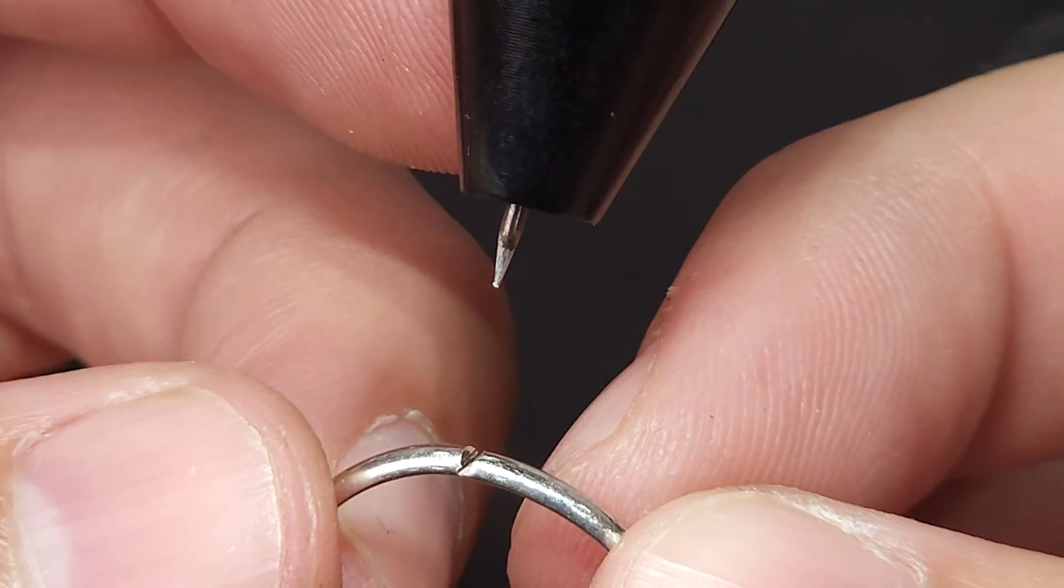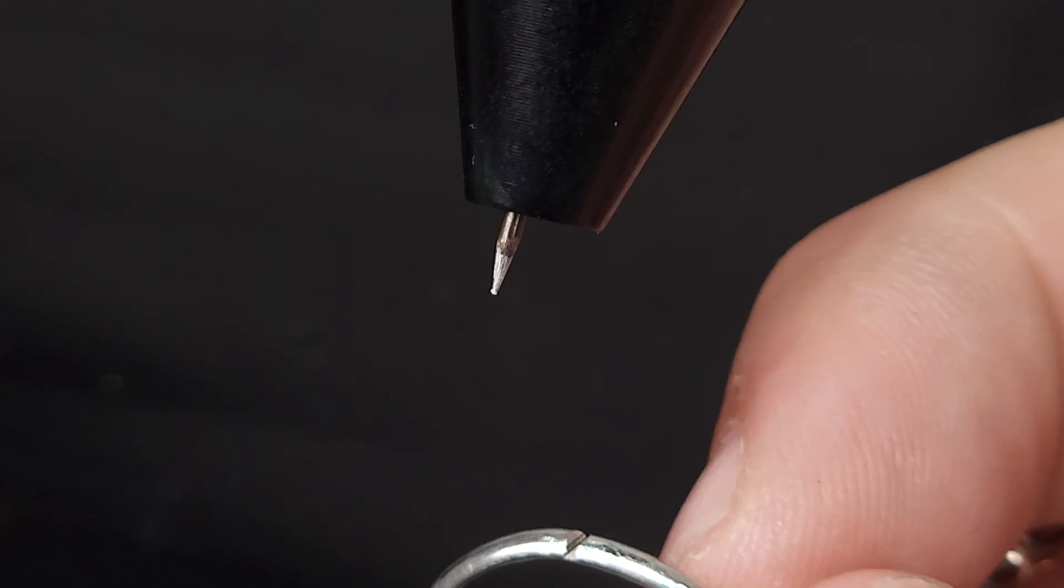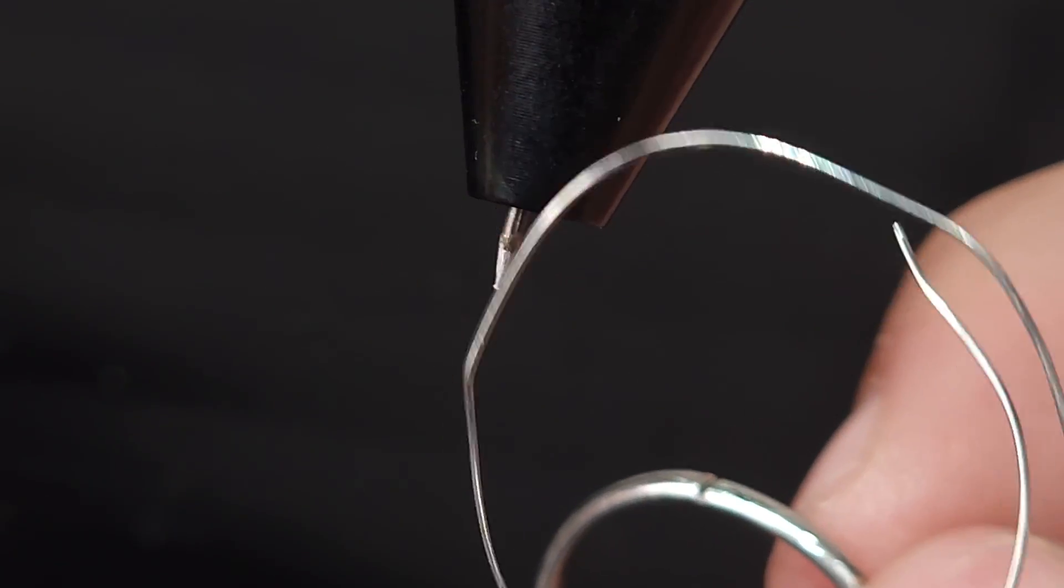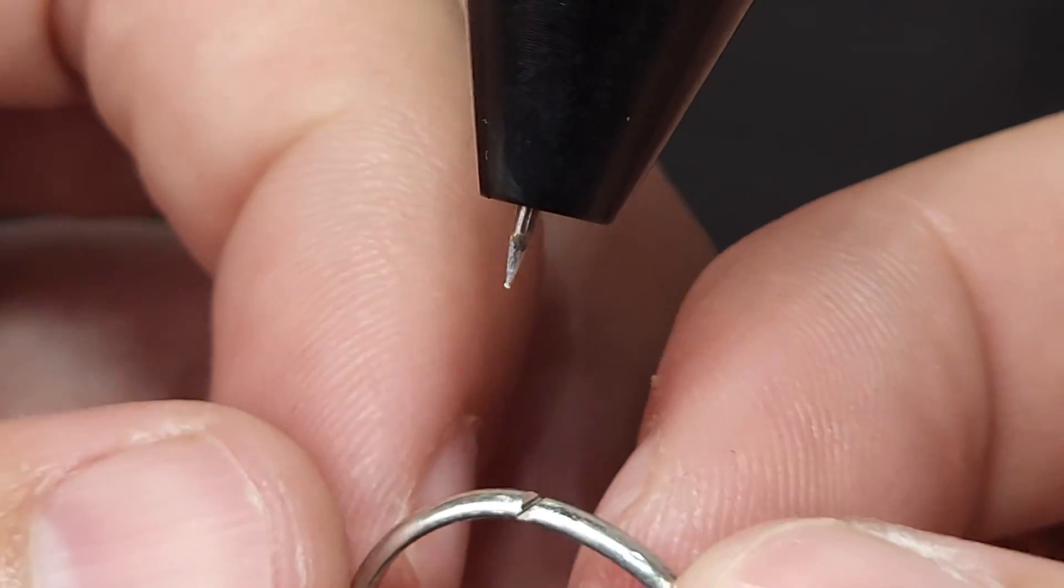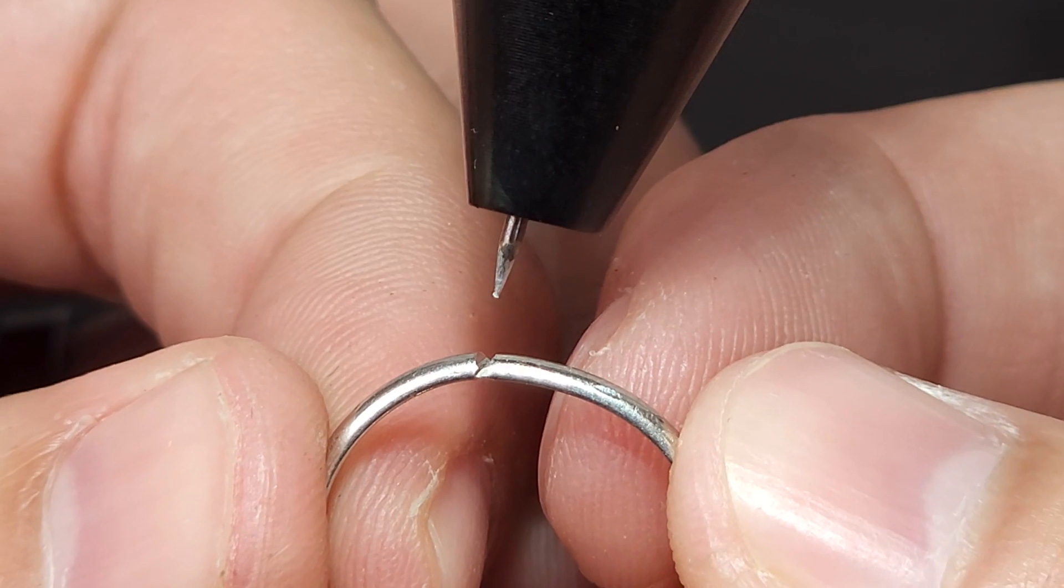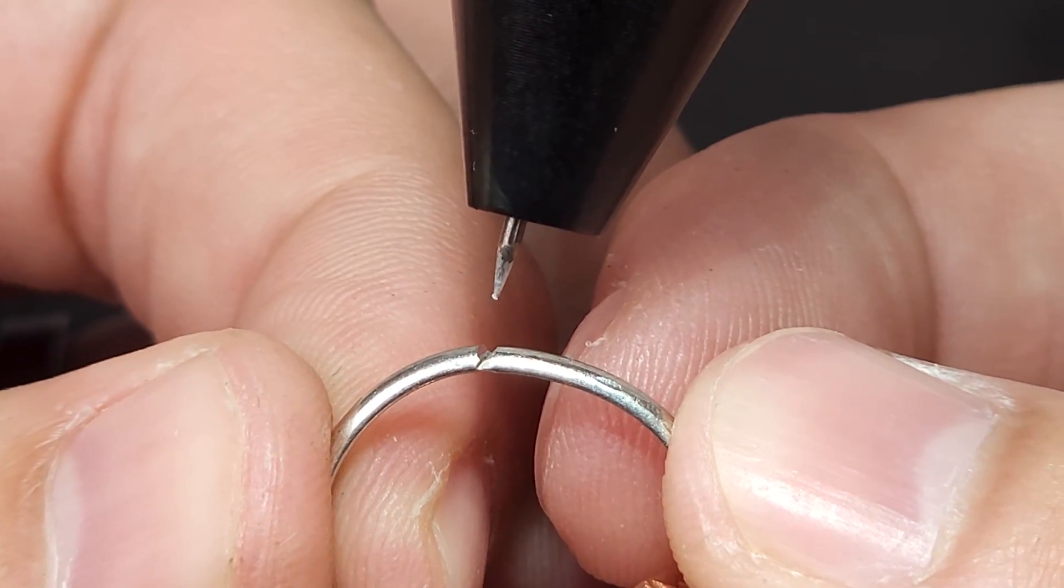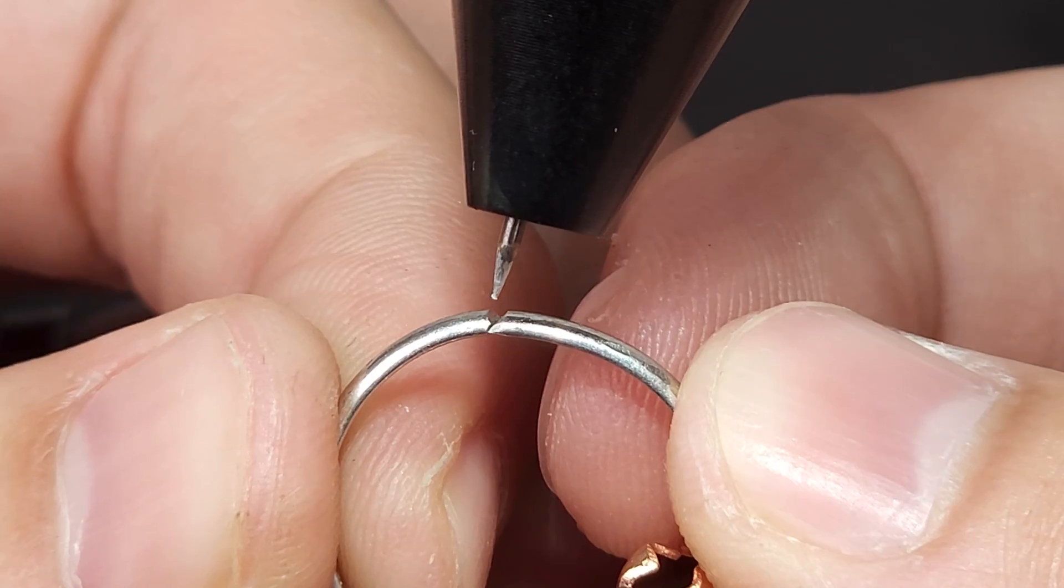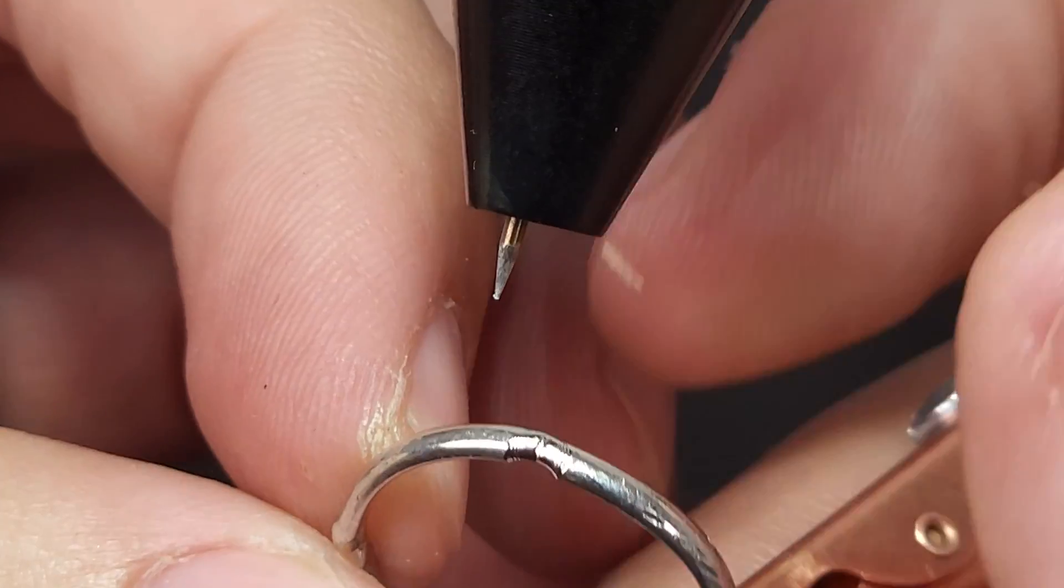So what we're going to do is we're going to lay down some initial welds and then we're going to do some backfill with some platinum wire. So what I like to do is I like to come in at an angle just like this and this allows me to get in there to flow that middle down. Perfect.